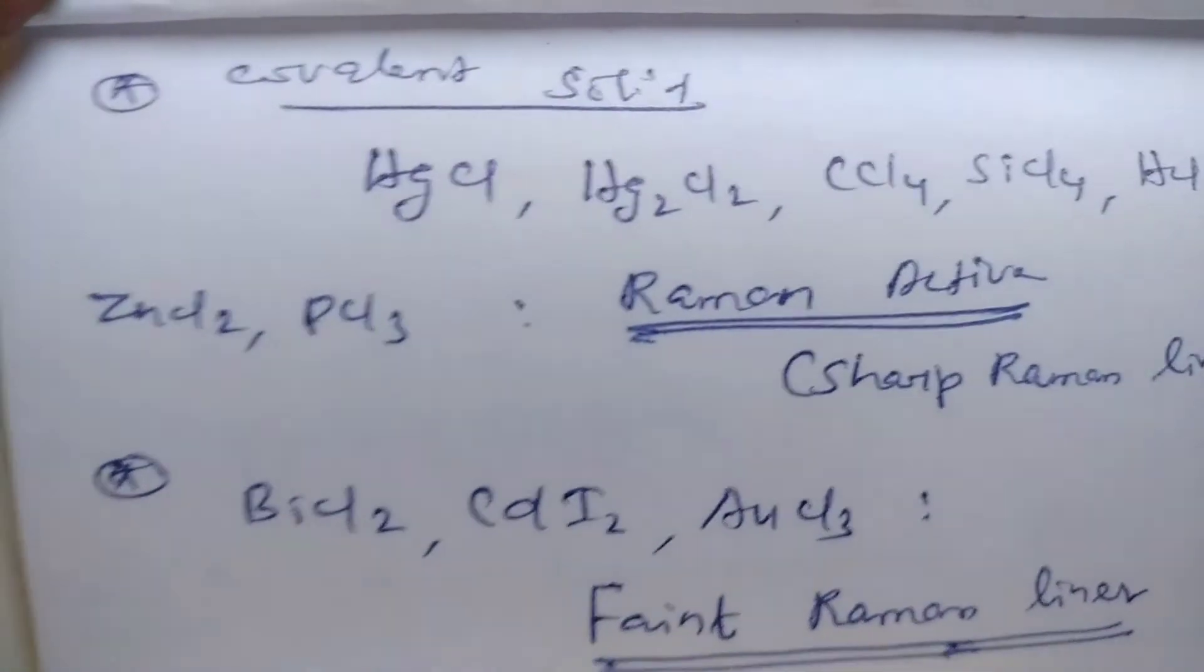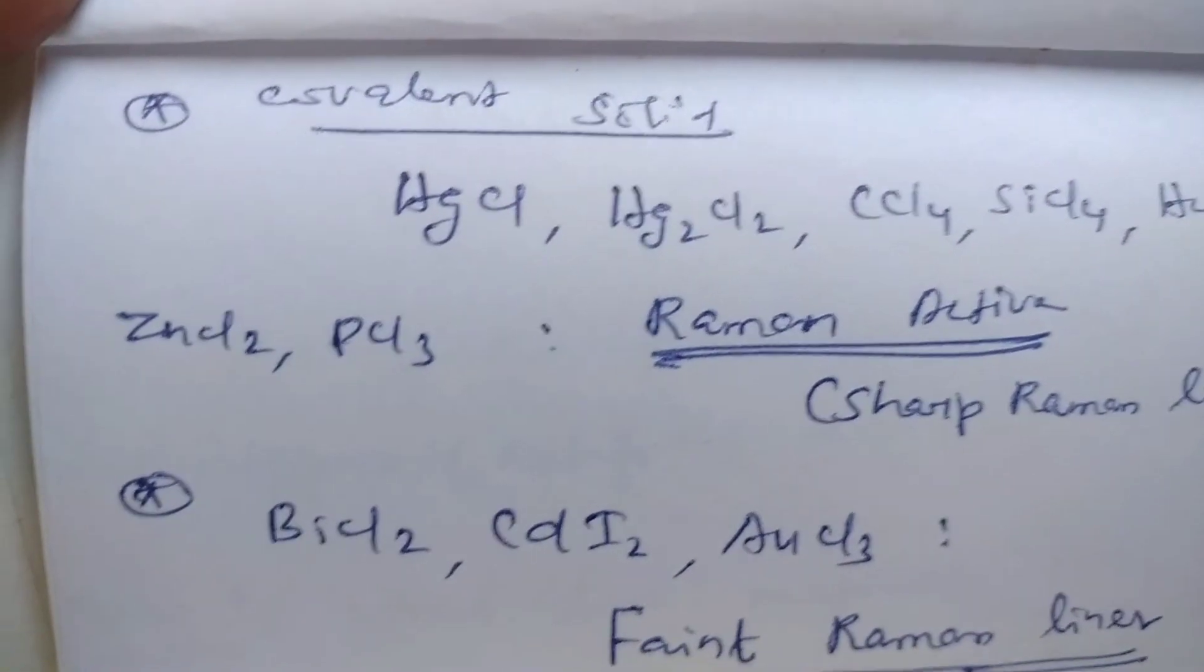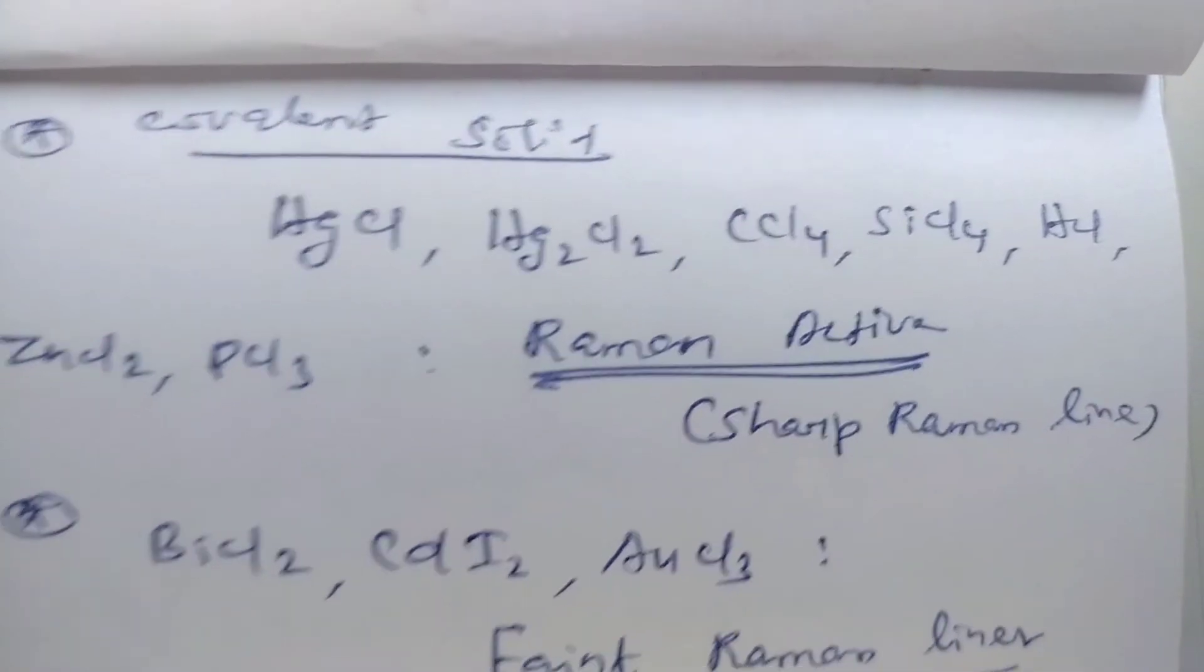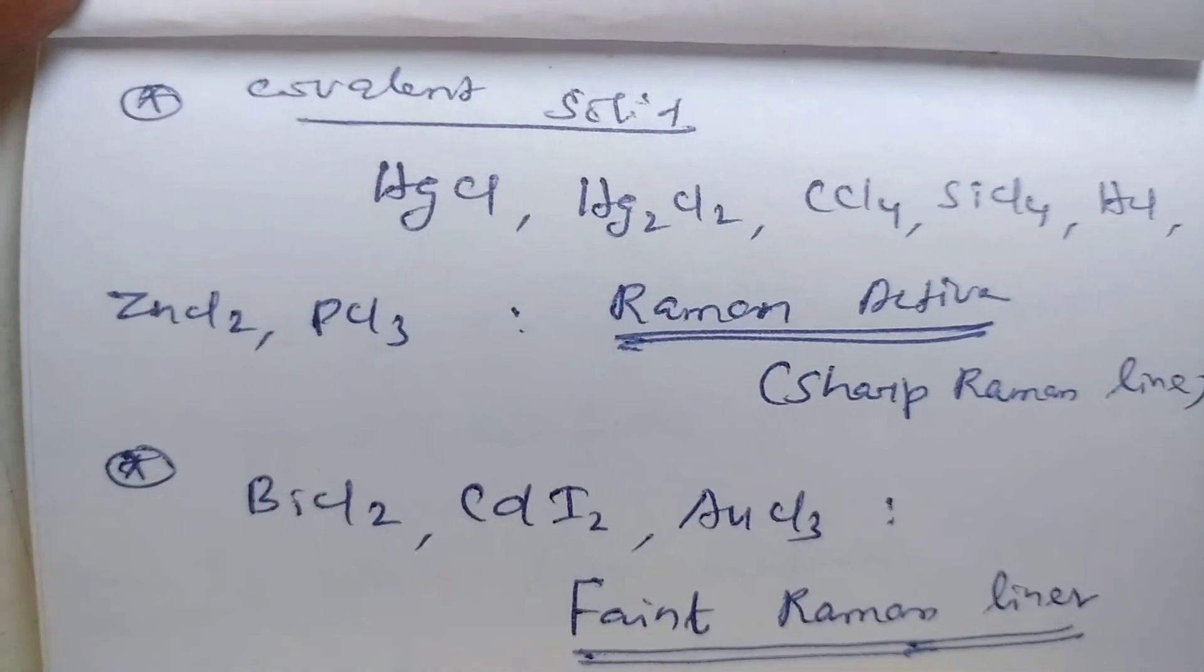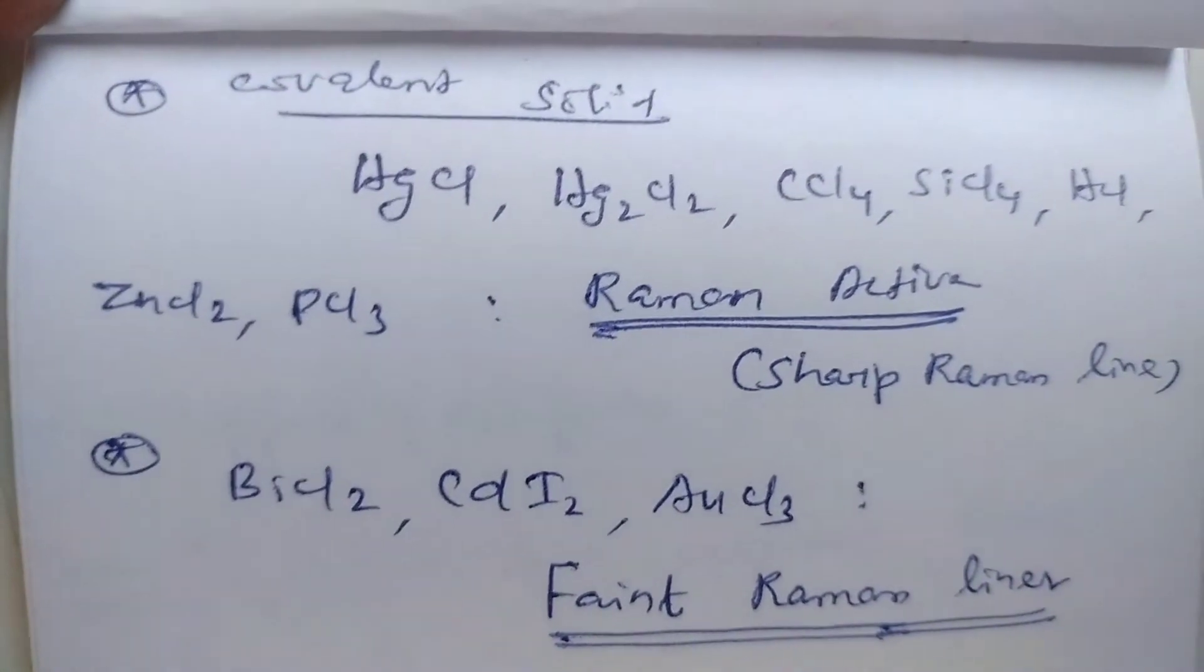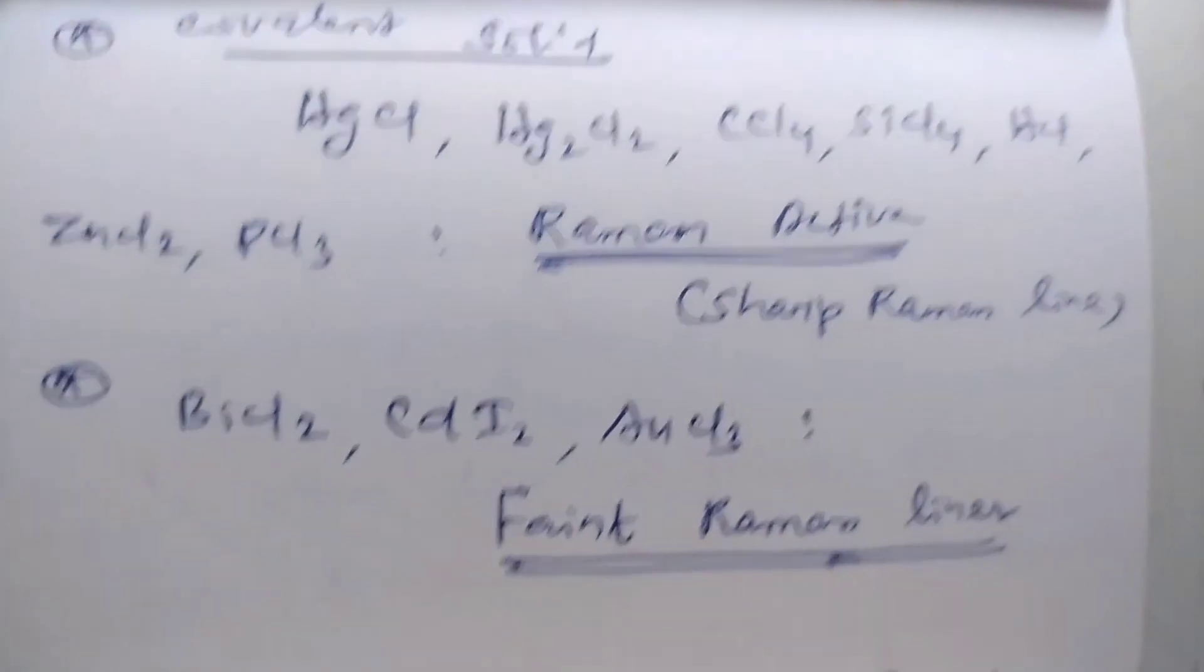Covalent solids: mercury chloride, mercurous chloride, carbon tetrachloride, silicon tetrachloride, hydrogen chloride, zinc chloride, and phosphorus trichloride are Raman active, showing sharp Raman lines.